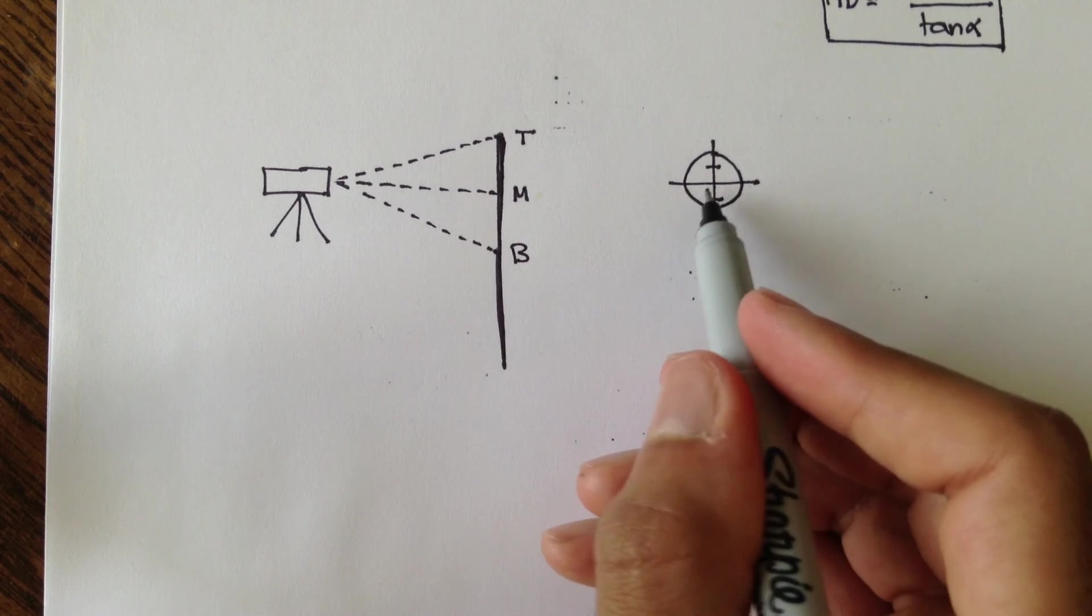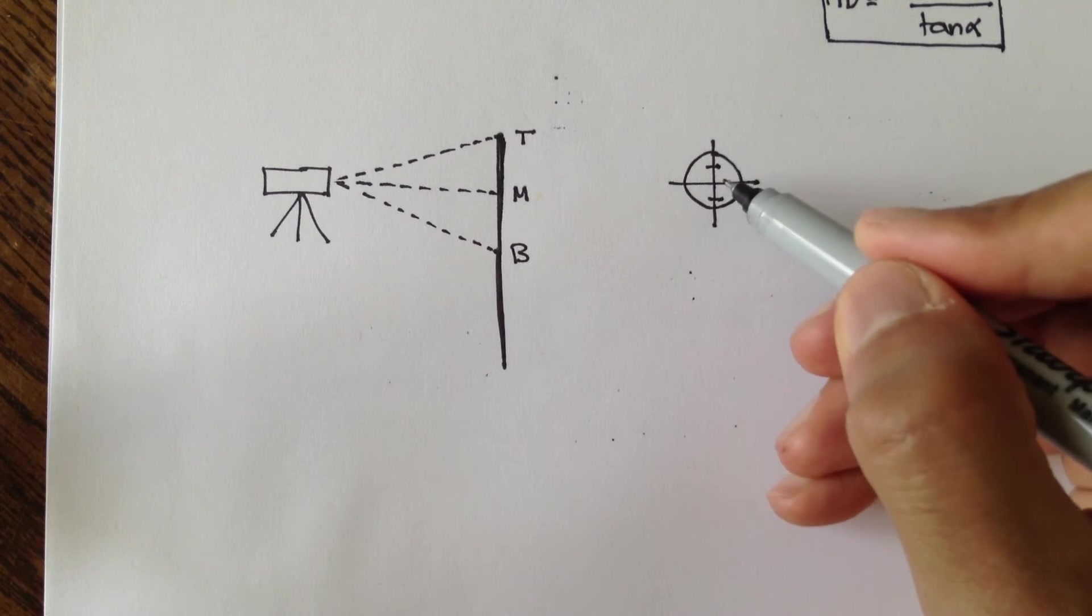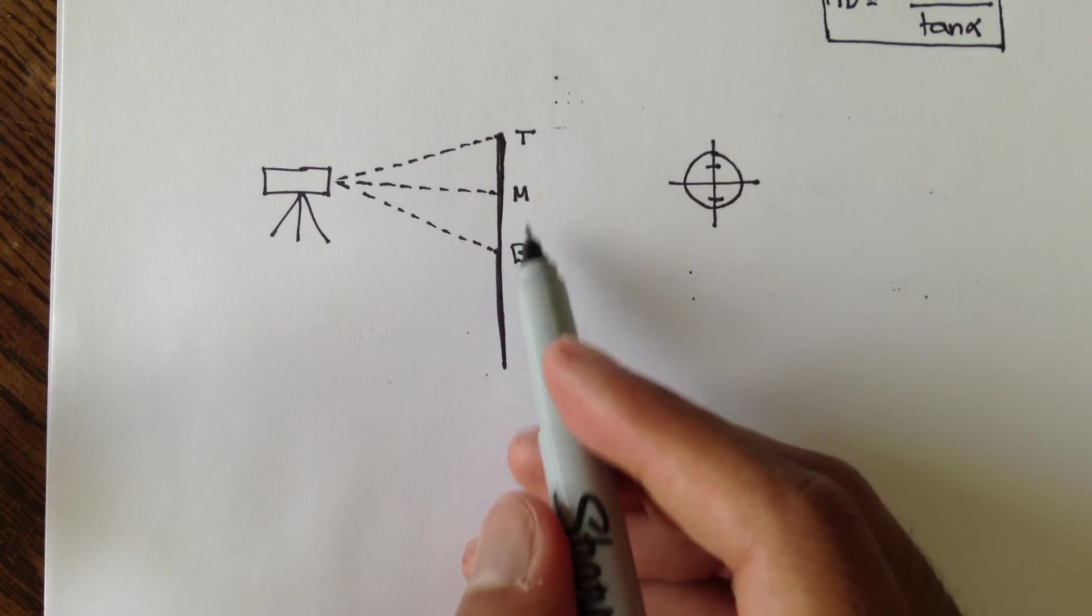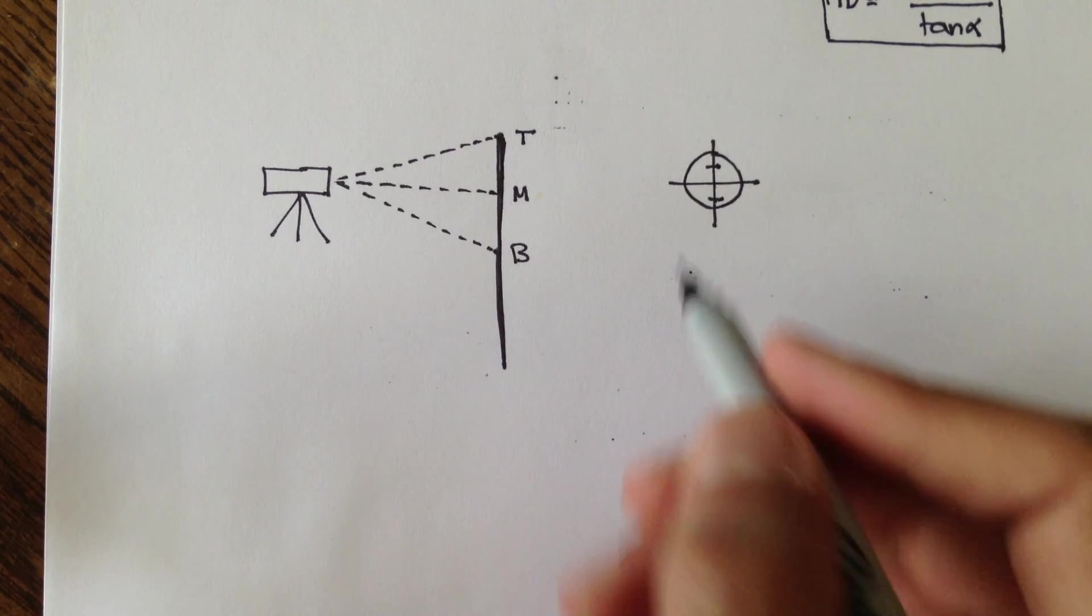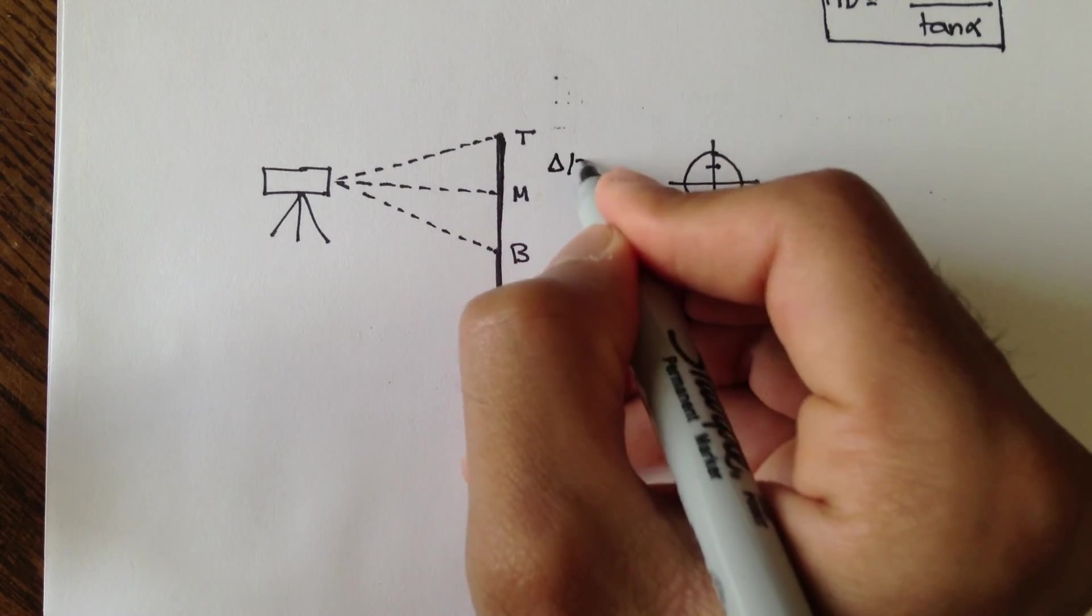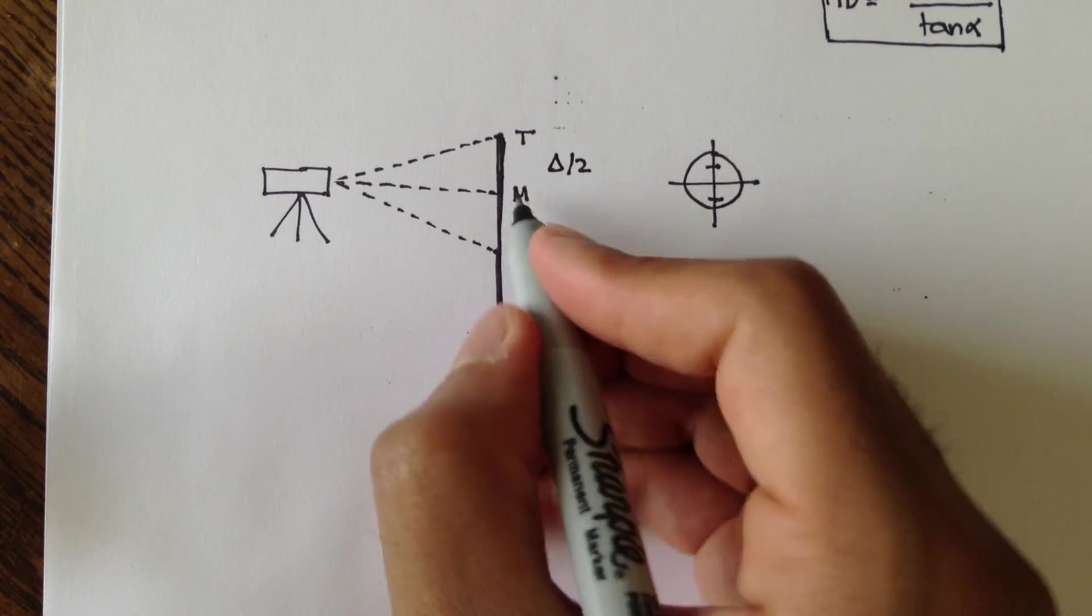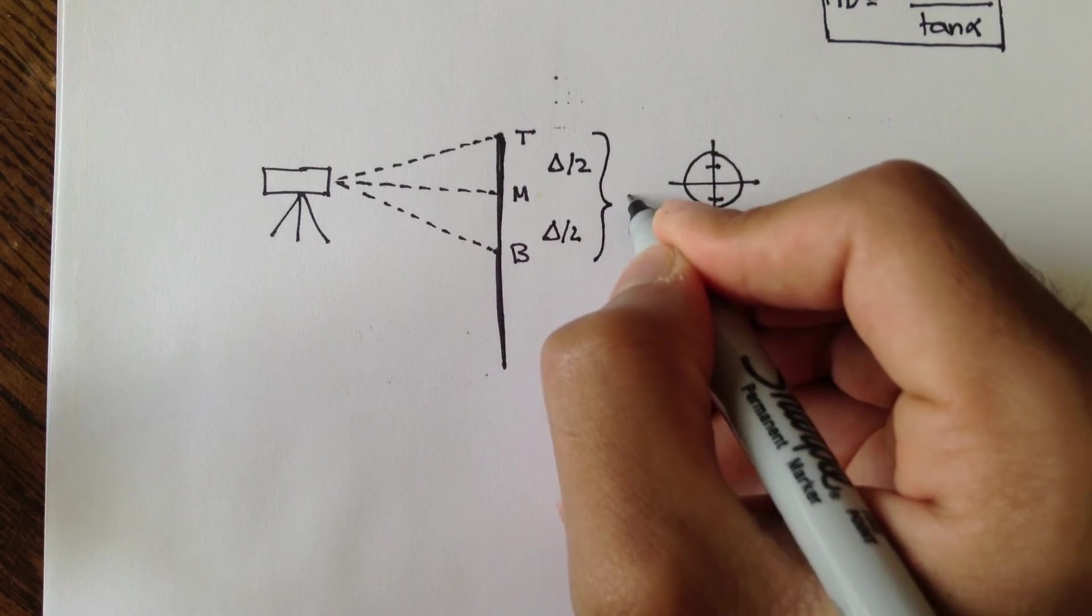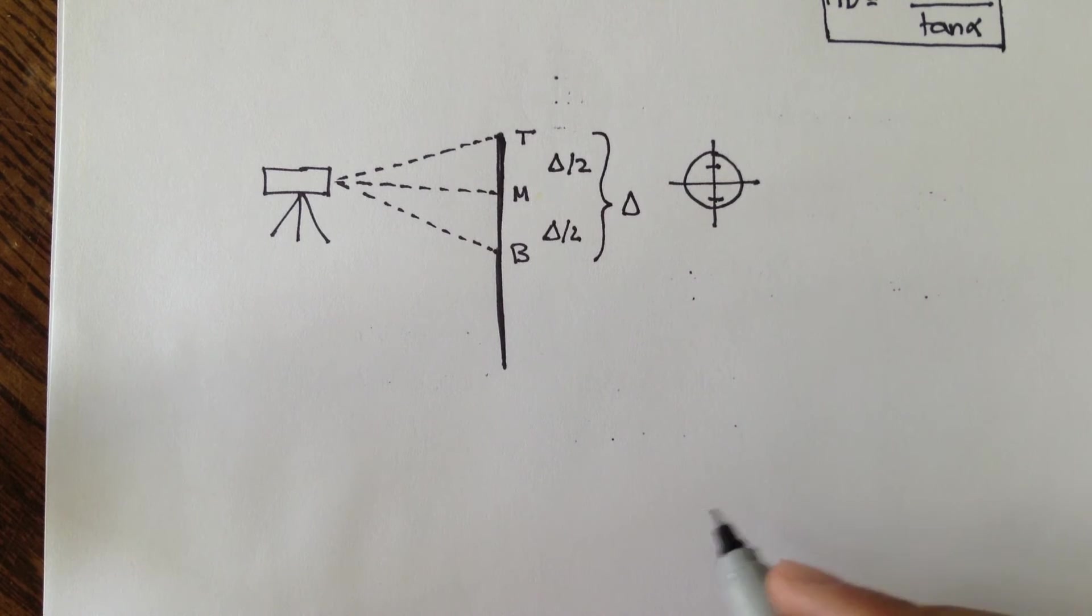So you look through the telescope, and you read the first tick mark, the middle, and the bottom to get your T, M, and B measurements. And remember, we said that the top minus the middle is half stadia, and the middle minus bottom is also half stadia. So, top minus bottom would be a full stadia, right?